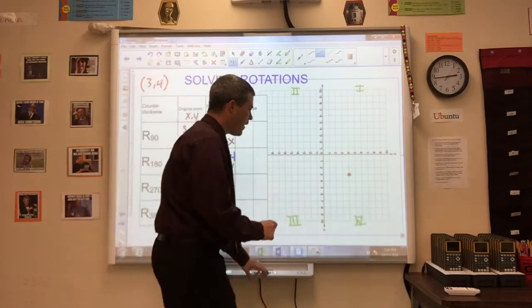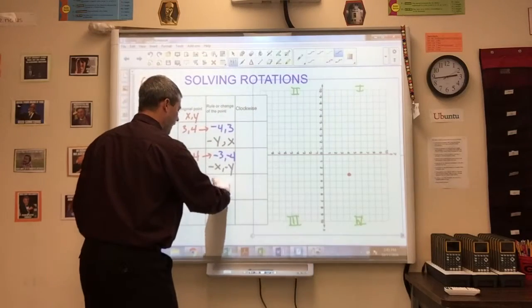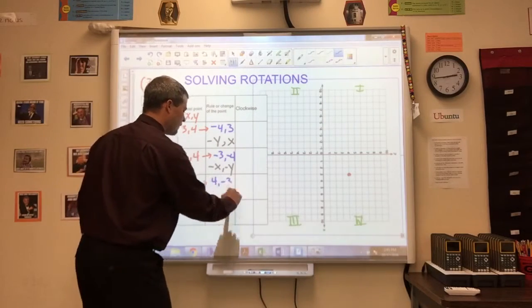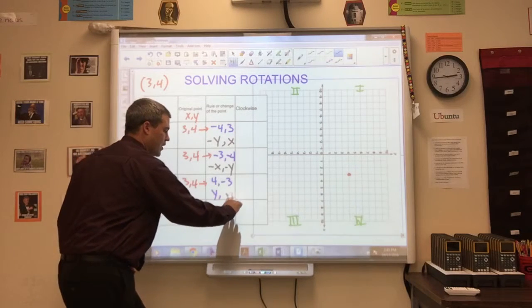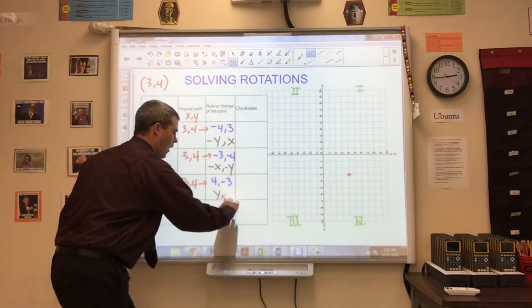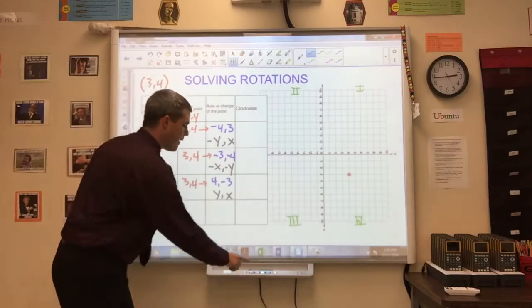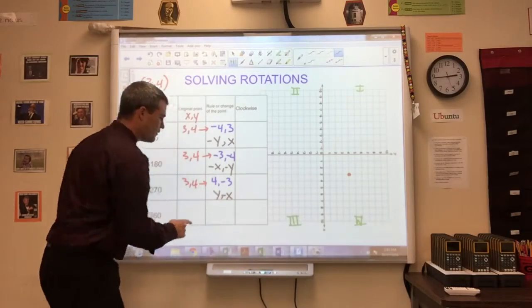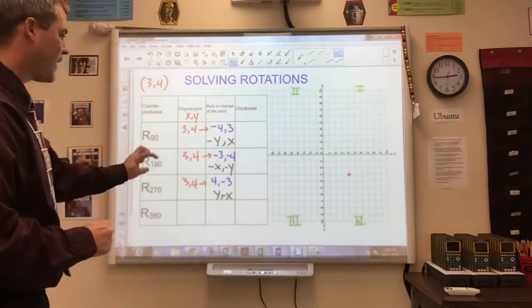Well, we've now gone 4 to the right and 3 down. So positive 4, negative 3. So as I can see, the x and y values have interchanged. Y has now come to the front, but the original x value of 3 has moved to the back and it has changed sides. So the rule for a 270 degree rotation is y, negative x.